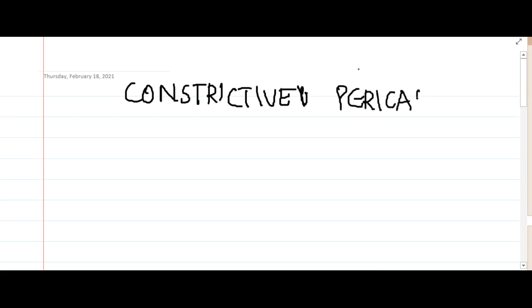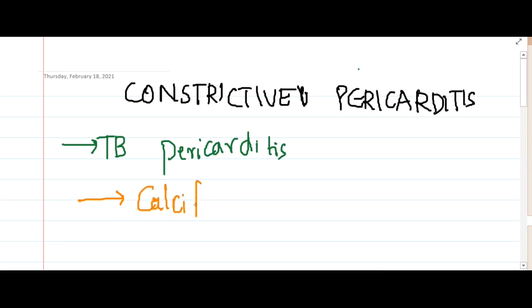Constrictive pericarditis mainly occurs due to tuberculosis, that is tubercular pericarditis. Here if you see the heart, we have tuberculosis, and after once it heals, there is deposition of fibrosis in the pericardium and slowly calcification develops around the heart. Around the heart there is development of calcification.